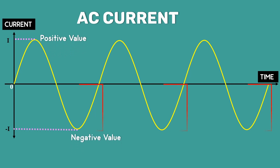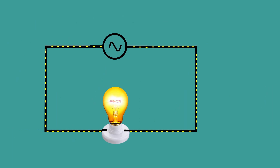What does the negative current represent? I have already mentioned that in AC, the electrons reverse their direction repeatedly. So, this negative current represents the electrons flowing in the opposite direction.